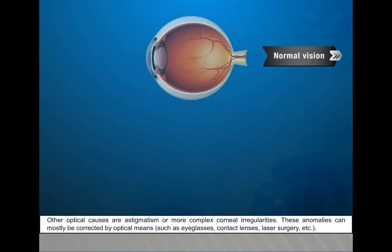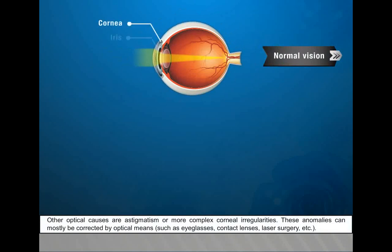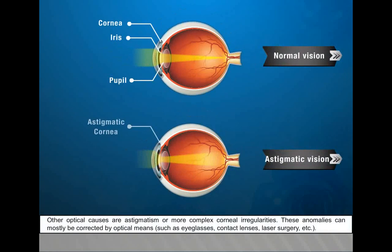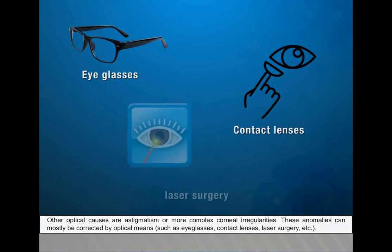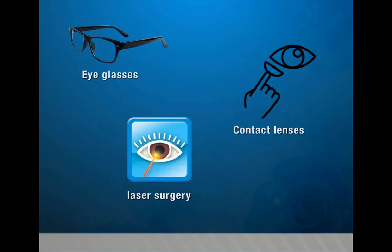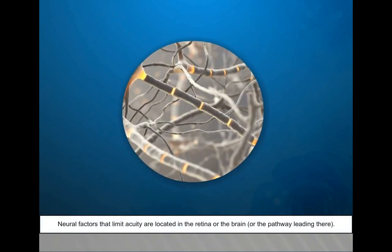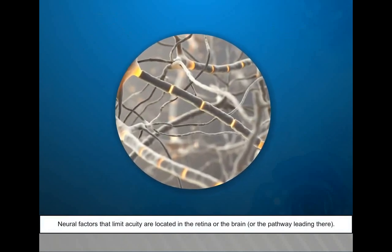Other optical causes are astigmatism or more complex corneal irregularities. These anomalies can mostly be corrected by optical means such as eyeglasses, contact lenses, laser surgery, etc.